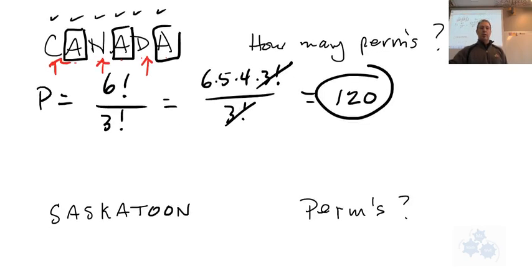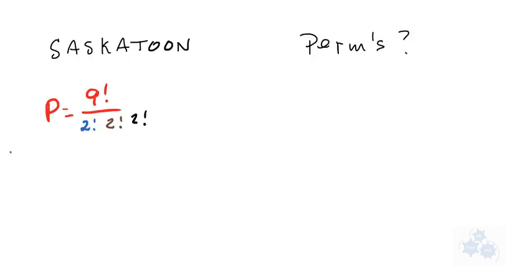So keeping on the Canadian theme here, here's another city in our fine province here, Saskatoon. So I'm going to give you a minute, and I'm going to see if you can come up with how many different permutations that we could make with the letters in the word Saskatoon, taking into account that we have now more than one letter that's repeating. So why don't you give that a try from what you know right now?